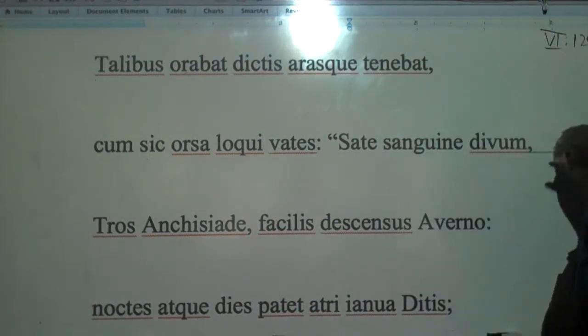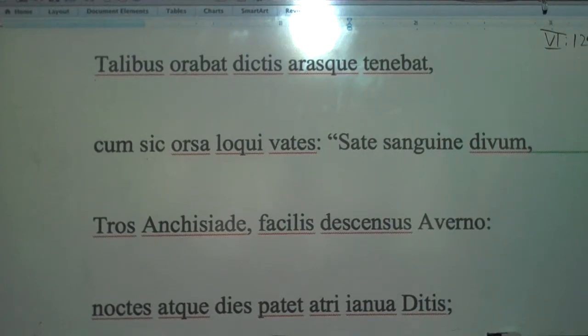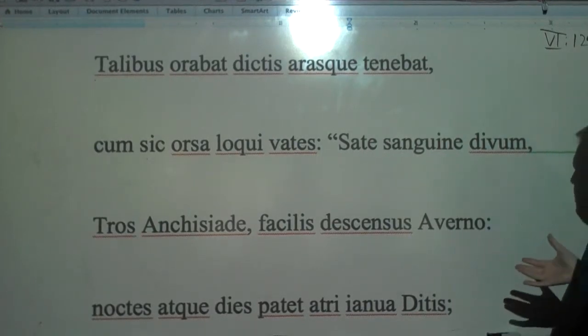Salvete omnes. Today we're going to look at Book 6, lines 124 to 136. This is the beginning of the Sibyl's speech where she's going to talk about going into the underworld.